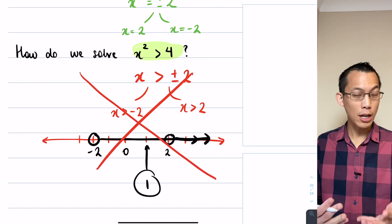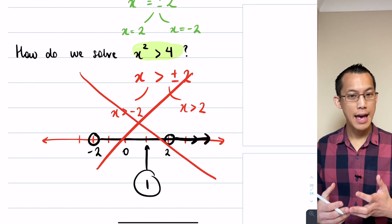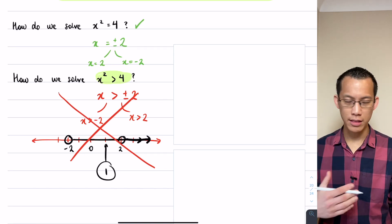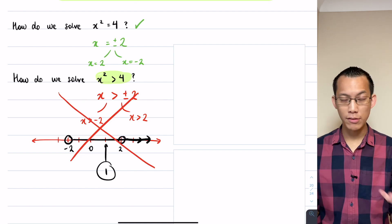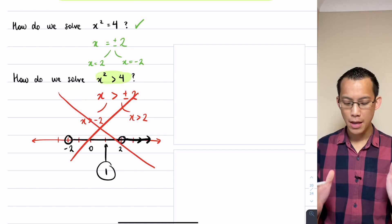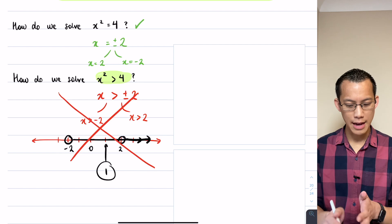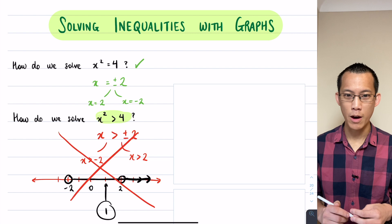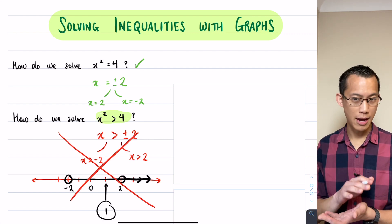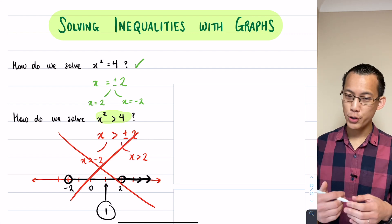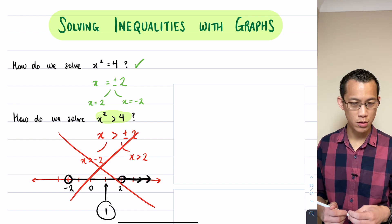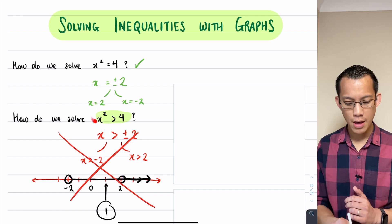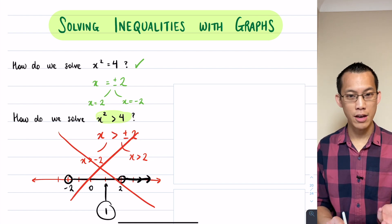Something's clearly gone wrong. We can't just treat an inequality the way we treat an equation. There are some parallels — we can add, subtract, or multiply by a positive number on both sides — but for solving things like this, we need a different technique. That's where graphs come in. Pick up your pens and draw along with me.